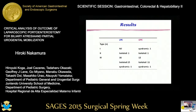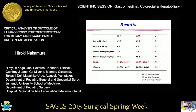In laparoscopic biliary atresia, classification was 16 type 3 and 1 type 2. In open PE, classification was 12 type 3 and 1 each of type 1 and type 2. Age and weight at portoenterostomy, follow-up length, and STL dosage were not statistically different. Laparoscopic PE is associated with higher jaundice clearance than open PE, but not statistically different. Liver transplantation ratio was similar between both groups.